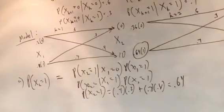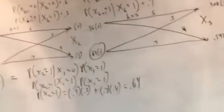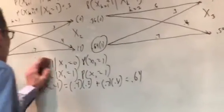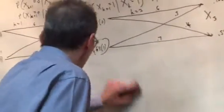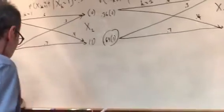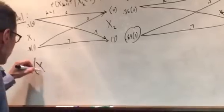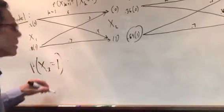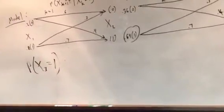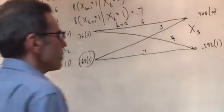So we want to determine the probability for x3 to equal 1. Again, we're going to look at it by inspection.